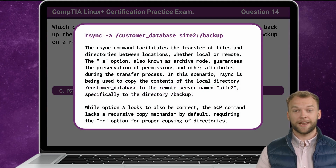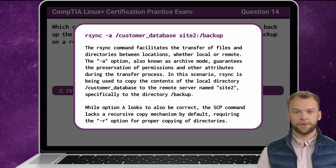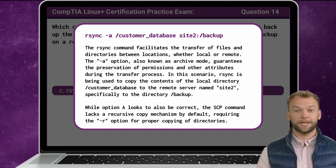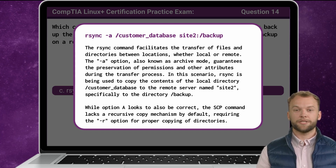Now that we know the answer, let's break it down. The rsync command facilitates the transfer of files and directories between locations, whether local or remote. The -a option, also known as archive mode, guarantees the preservation of permissions and other attributes during the transfer process. In this scenario, rsync is being used to copy the contents of the local directory /customer_database to the remote server named site2, specifically to the directory /backup. While option A looks to also be correct, the scp command lacks a recursive copy mechanism by default, requiring the -r option for proper copying of directories.